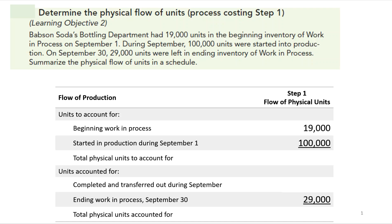What we're going to do is work through the five-step process of process accounting using a variety of different examples. We'll start with step one and move to step two, step three, and so on.